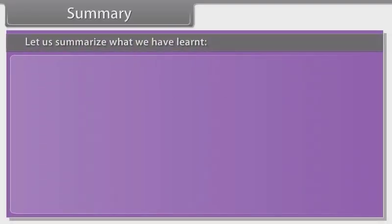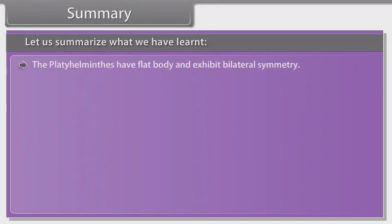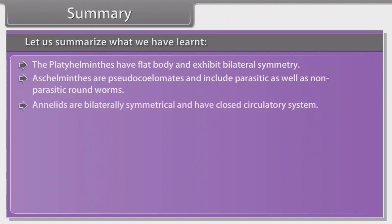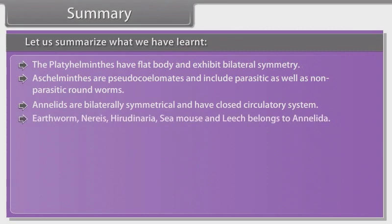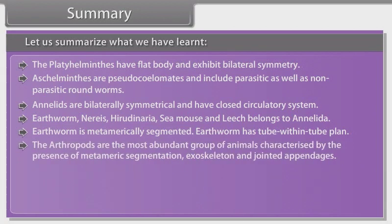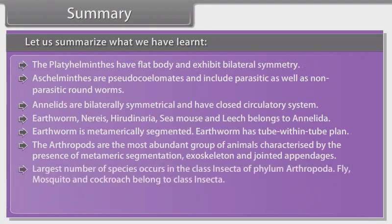Let us summarize what we have learned. Platyhelminthes have a flat body and exhibit bilateral symmetry. Aschelminthes are pseudocoelomates and include parasitic as well as non-parasitic roundworms. Annelids are bilaterally symmetrical and have a closed circulatory system. Neries, Hirudinaria and earthworm belong to Annelida; earthworm is metamerically segmented and has a tube-within-tube body plan. The arthropods are the most abundant group of animals, characterized by metameric segmentation, exoskeleton and jointed appendages. The largest number of species occurs in class Insecta of Phylum Arthropoda; fly, mosquito and cockroach belong to class Insecta.